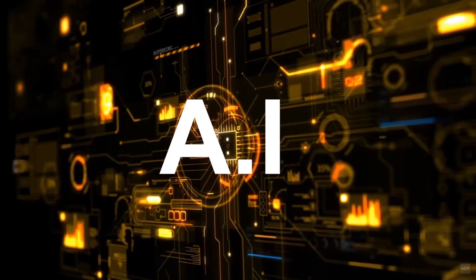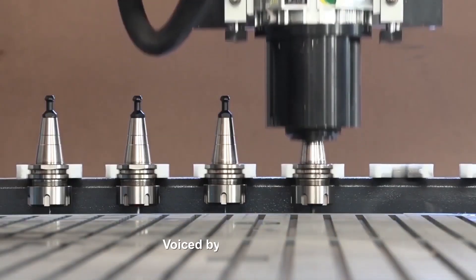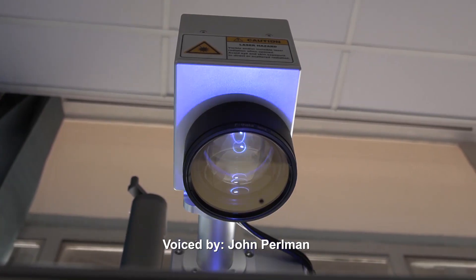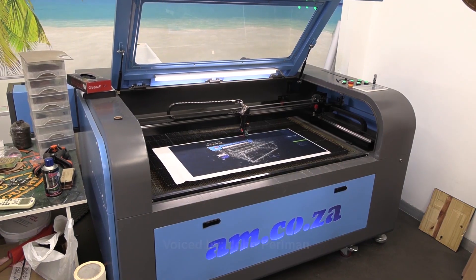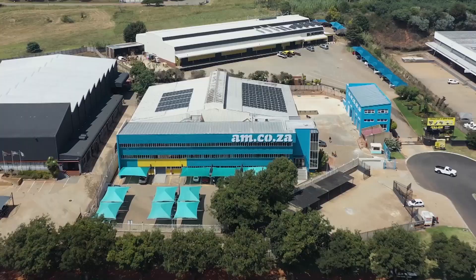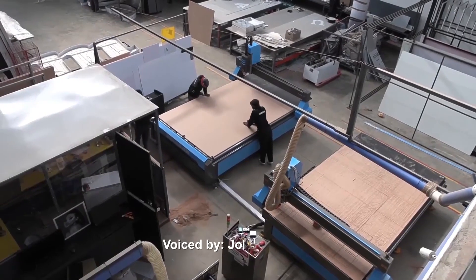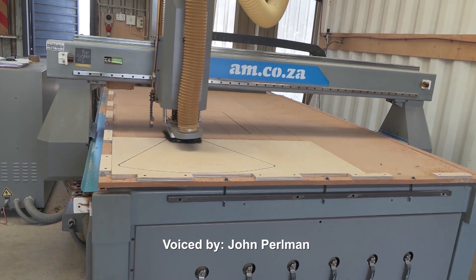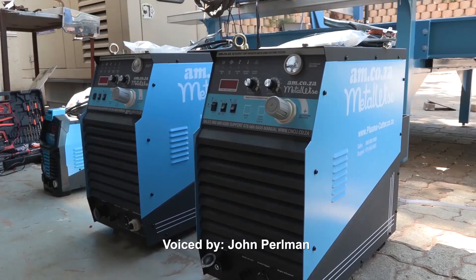AI may eventually take over, but what's for certain is that smart machines are already operating all over the world right now. So stay ahead with am.co.za. For 11 years, they've been the leader in CNC and printing machines like CNC routers, large format printers, vinyl cutters, laser cutters, plasma cutters, DTF printers, and many more.